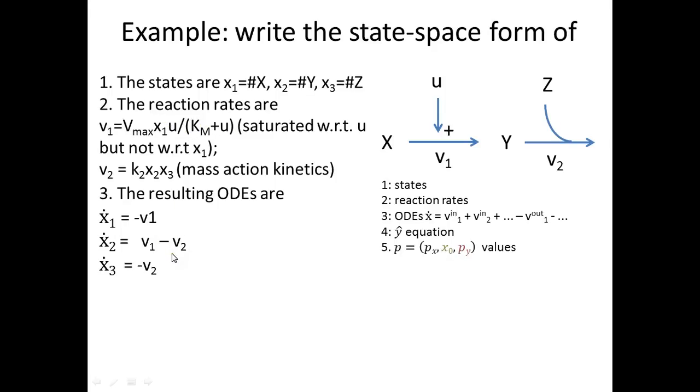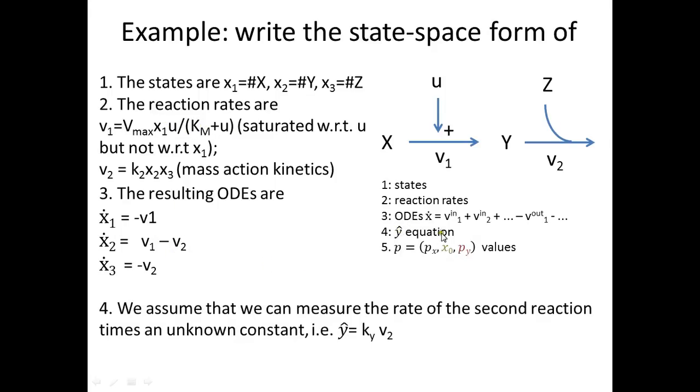Measurement equation: again from looking at this one there is no way of knowing what is measured. So here you simply have to consider what are the assumptions, what is the knowledge that we have about the system and then you have to write that up. And the general thing to learn is to be equally comfortable in writing this in words, so equally comfortable saying something like we assume that what we can measure is the rate of the second reaction times an unknown constant.